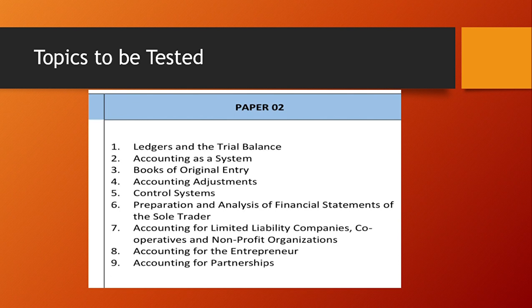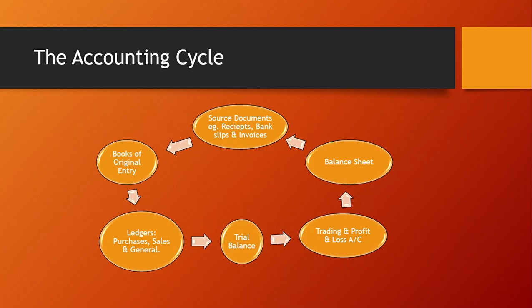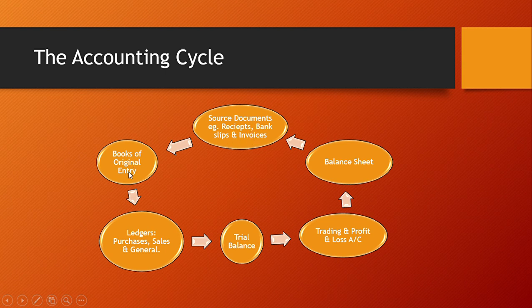So the accounting cycle is the first thing. The accounting cycle is also called the accounting process, and it consists of three basic steps. We have the source document, which is the first stage of the accounting process. Examples of source documents are receipts, bank slips, and invoices. From the source documents, you move to the books of original entry, and then you move to the ledgers — we have three types of ledgers: purchases, sales, and general. We have six books of original entry.